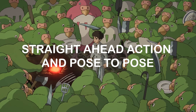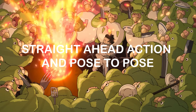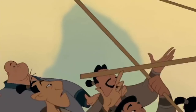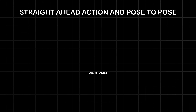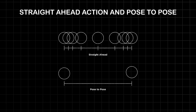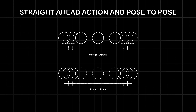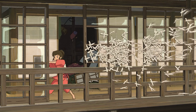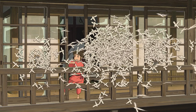Straight ahead action and pose to pose represent contrasting methodologies for animating movement. While straight ahead action embraces spontaneity and improvisation, pose to pose prioritizes precision and control. Each approach offers distinct advantages, allowing animators to adapt their workflow to the demands of the scene and the creative vision.